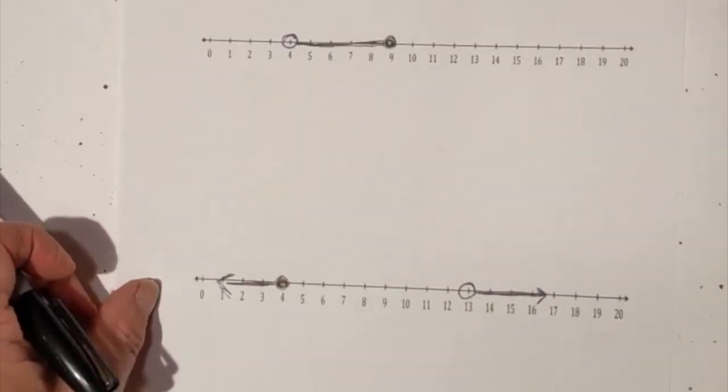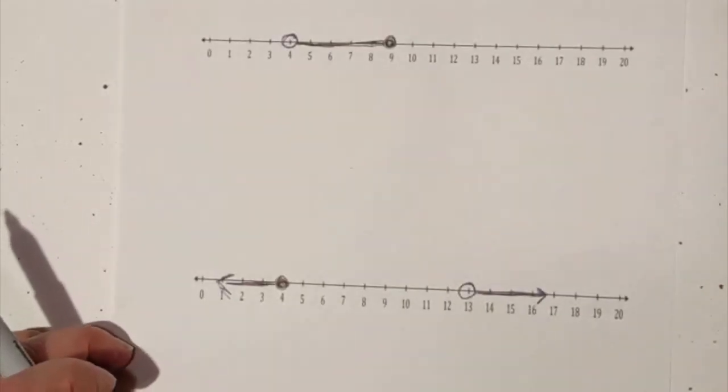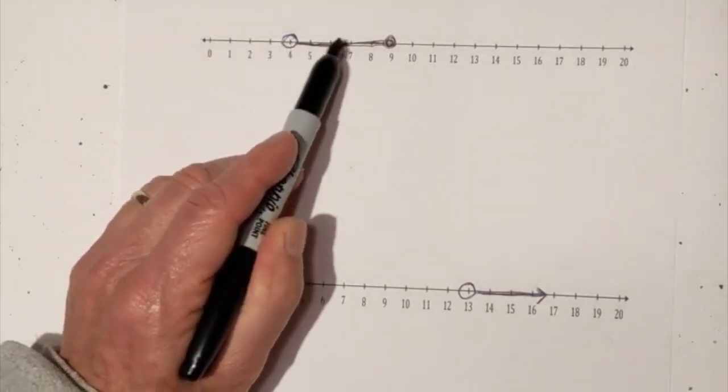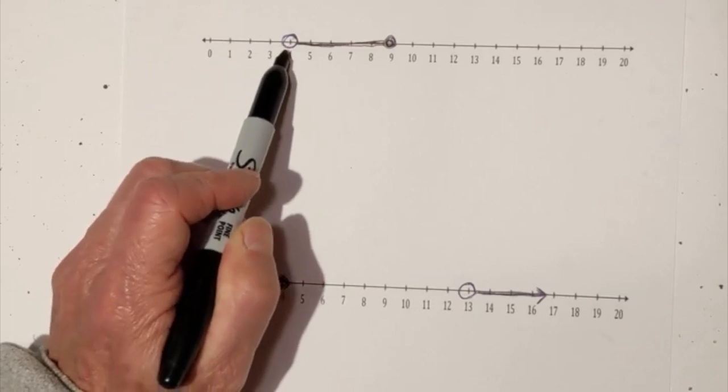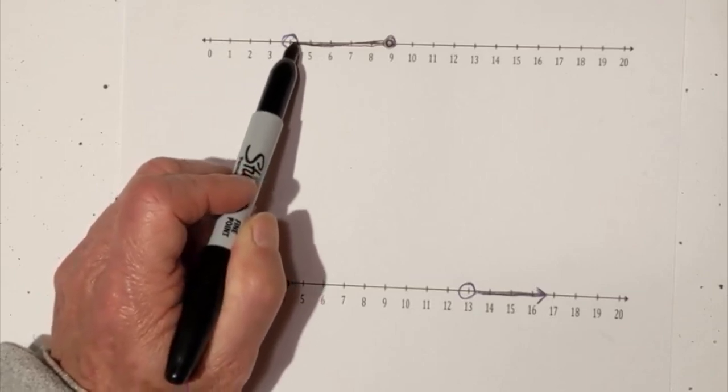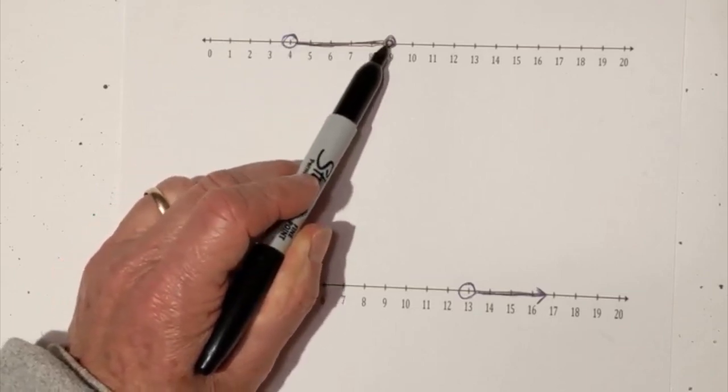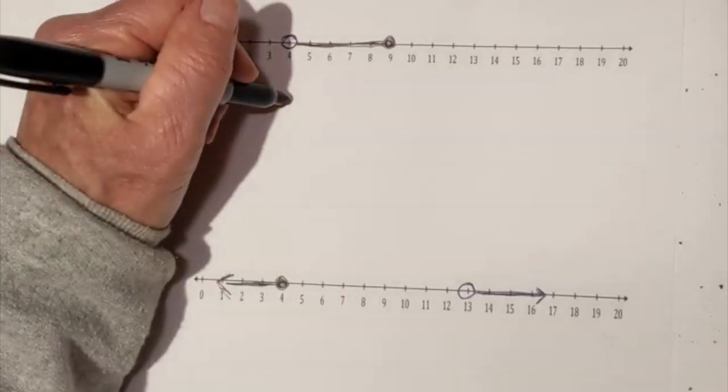Now what if you see a problem like this and you need to write out the inequality. So let's look at this. We know that it's going to be an AND because it must be greater than 4 and less than or equal to 9. So let's just write this.